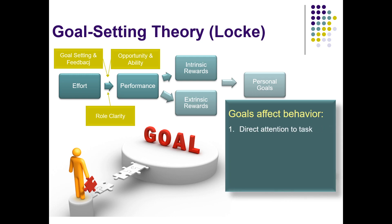Goals affect behavior by directing our attention to a task. When we know what we're trying to achieve, we can pay attention to those tasks or behaviors that'll help us achieve those goals. Goals also help us to mobilize our on-task efforts — if we know that we're trying to get somewhere, it helps us to really double down and focus. We tend to focus in on tasks that are helping us achieve the goal and start deleting out the tasks that are not.